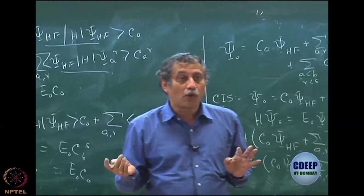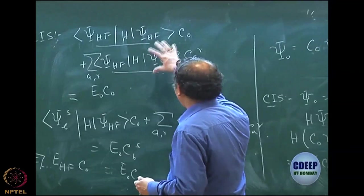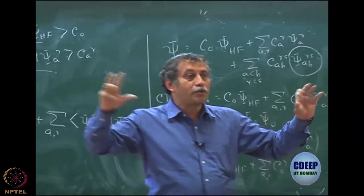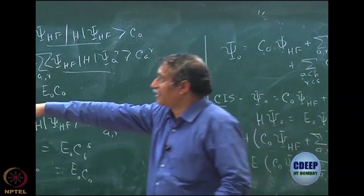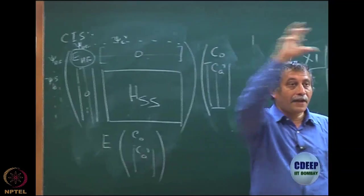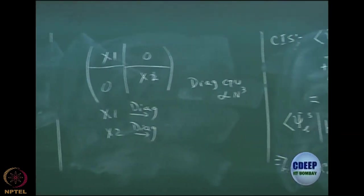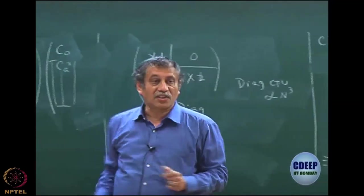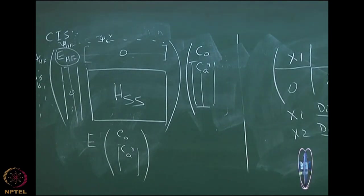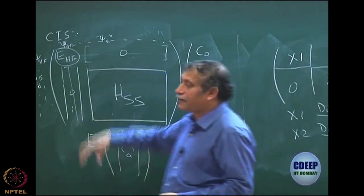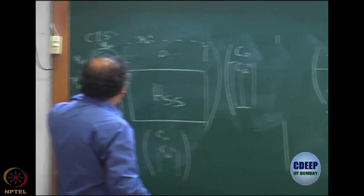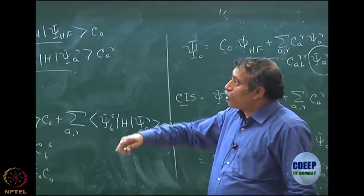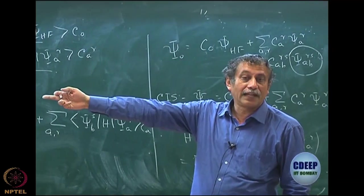Because the entire block of psi_AR does not couple with psi_HF, I get a block diagonal structure. I can get the ground state energy directly as the Hartree-Fock energy, and then just diagonalize H_SS. H_SS is not 0 of course — diagonalizing it will give the rest of the eigenvalues, which are the excited states. So CIS cannot be used for ground state. The ground state does not improve; Hartree-Fock remains Hartree-Fock, but CIS can be used to get excited states because the eigenvalues of the H_SS block give excited states.